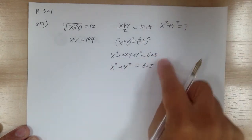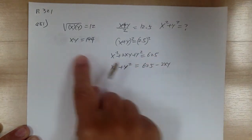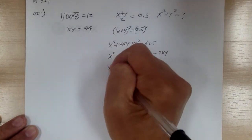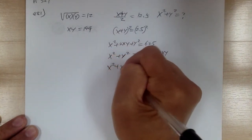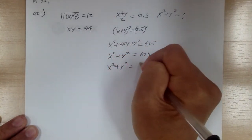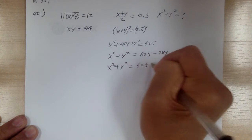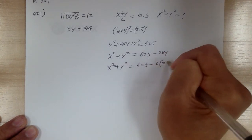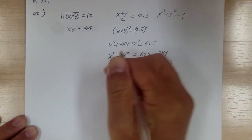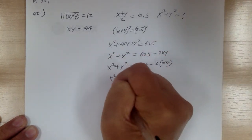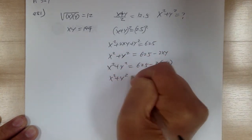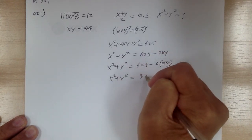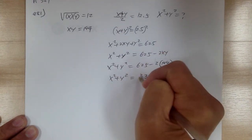Move the 2xy over. We know what xy is, so you can substitute. So x squared plus y squared equals 625 minus 2 times 144. So x squared plus y squared is going to equal 337.